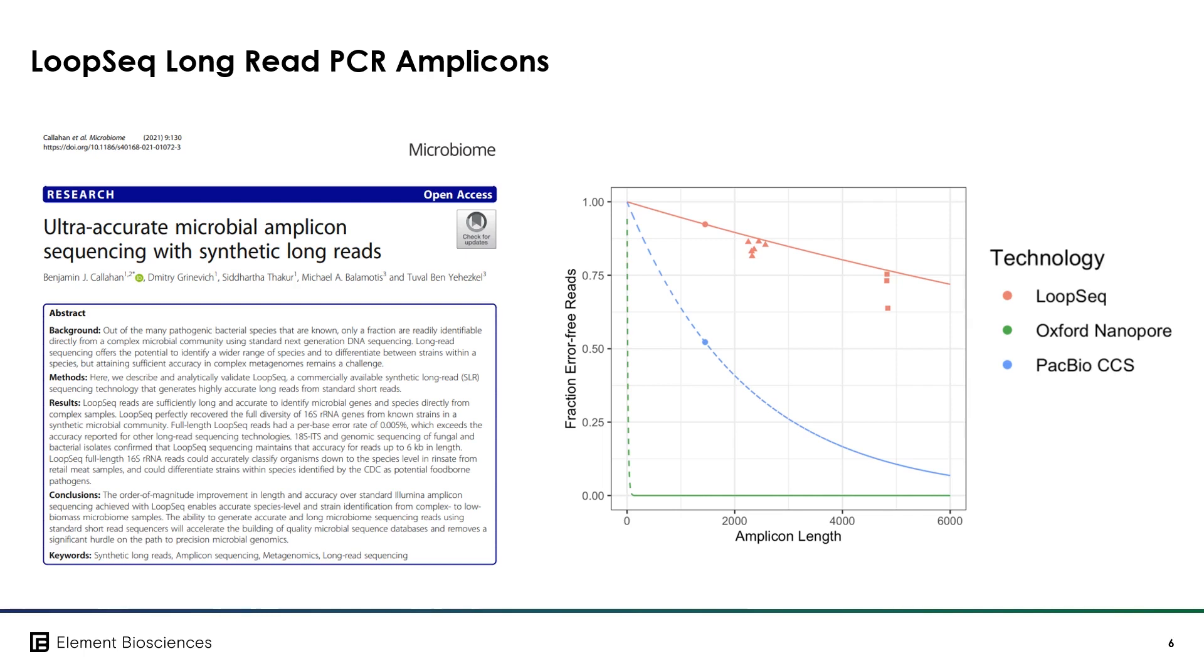Most notably, at 5 kb, it has an error-free fraction that is roughly five-fold better than the next long read technology. The highly accurate long reads is a two-fold result of using short read technology, which is inherently more accurate than native long read sequencing and because of oversampling.